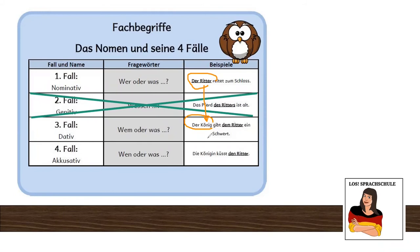Last one. Vierter Fall — Akkusativ. 'Wen oder was?' Who or what? 'Die Königin küsst den Ritter' — the queen kisses the knight. Die Königin, the person of action, is the subject in nominative. And who or what is she kissing? She kisses the knight. So the verb 'to kiss somebody' requires accusative. And the verb 'to give something to somebody' requires dative.